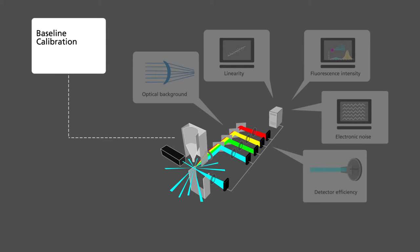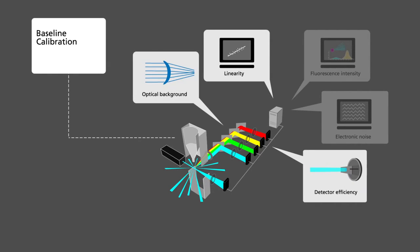At each calibration, data is compared to the baseline and is typically done weekly. This calibration comprises, among others, of measuring factors like linearity, detector efficiency, optical background, and electronic noise. We also determine the fluorescent intensity for each parameter that maximizes its resolution.